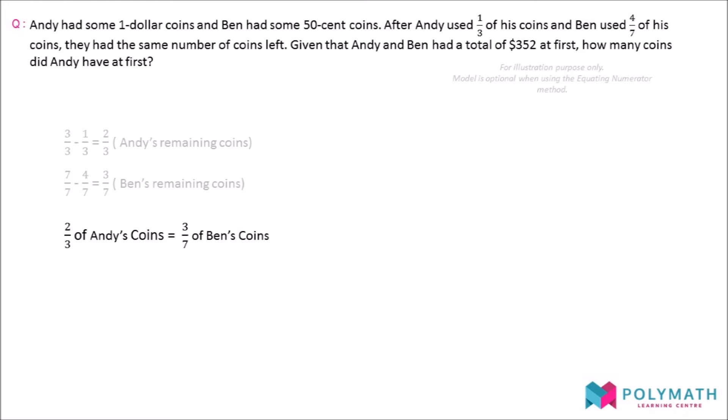Let's use a model to understand this concept better. Since 2 out of 3 units of Andy's coins are equal to 3 out of 7 of Ben's coins, we draw 2 units of Andy aligning with 3 units of Ben.